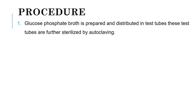These are the requirements. Let's see the procedure. Glucose phosphate broth is prepared and distributed in test tubes. These test tubes are further sterilized by autoclaving. According to the media composition, we have to prepare glucose phosphate broth, distribute it in test tubes, and then sterilize these test tubes by autoclaving.